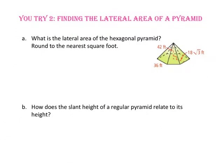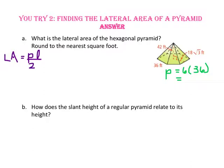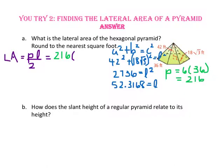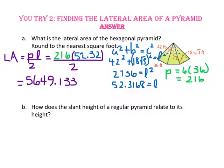Pause the video and do U-try number 2. For part A, what is the lateral area of the hexagonal pyramid? Round to the nearest square foot. Let's start with the formula: perimeter times slant height divided by 2. To find the perimeter, there are 6 congruent sides each being 36 feet long, so 6 times 36 is 216 feet. Because the slant height isn't given, we will need to use the Pythagorean theorem: 42 squared plus (18√3) squared equals the slant height squared. The slant height is approximately 52.32. Multiplying the slant height times the perimeter and dividing by 2, rounded to the nearest square foot, we get 5,649 square feet.